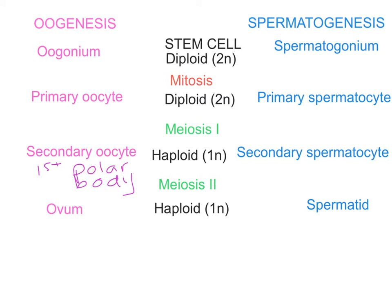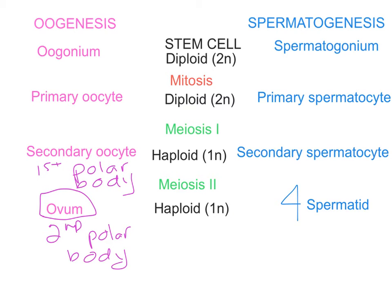Following meiosis II, the secondary oocyte develops into the ovum and the secondary polar body. So in females, of the four cells that arise from meiosis, only one actually develops into the ovum. With males, on the other hand, all four spermatids eventually get turned into sperm, and the product of spermatogenesis is actually four haploid spermatids.